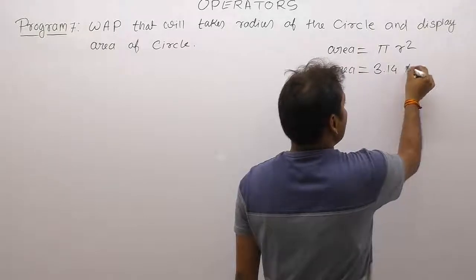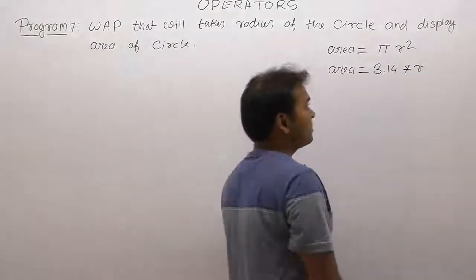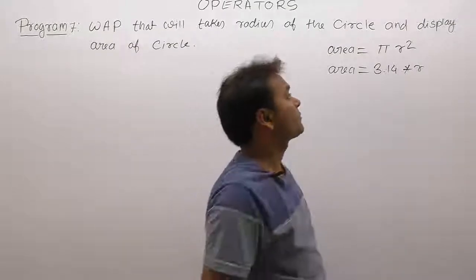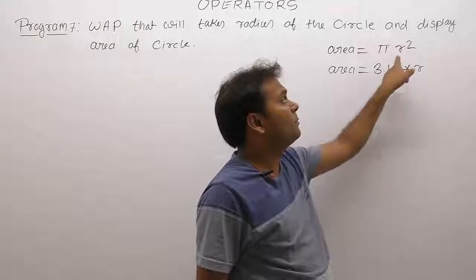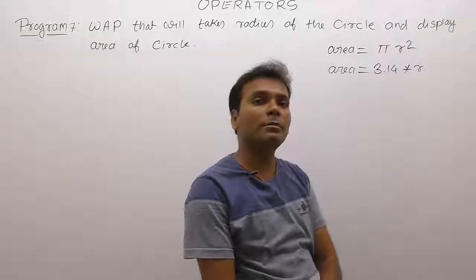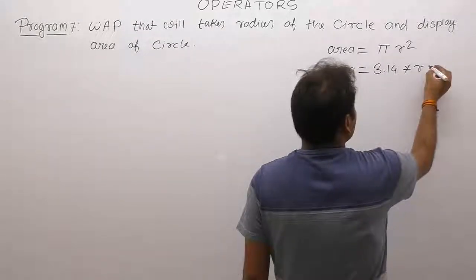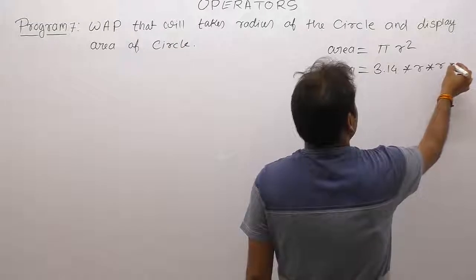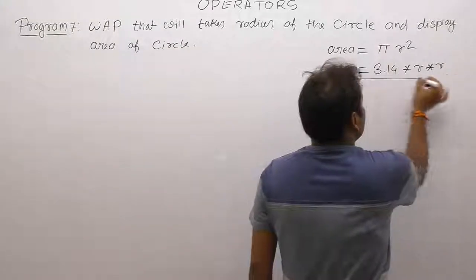Pi into r square. R square - just like the previous case when we discussed how to calculate square of a given number. Here the number is nothing but radius. Radius square means to square the number, multiply the number by itself. Similarly, r square means radius multiplied by r. This is the expression for calculating area of the circle using C program.